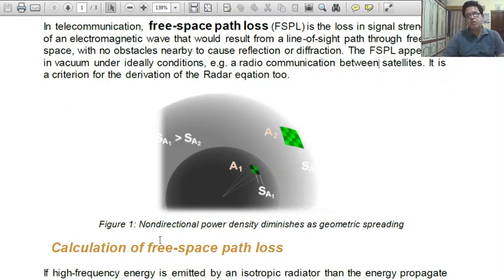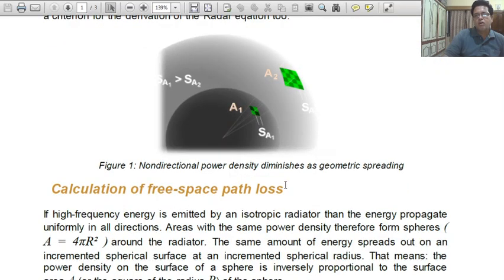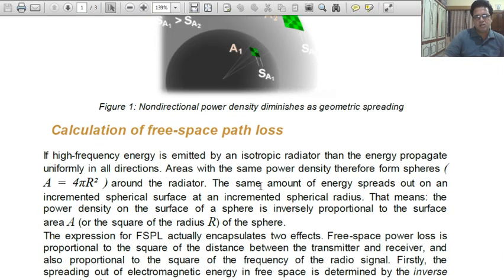This figure shows non-directional power density dimensions as geometry spreading. If geometry spreading, here is an area SA1 and after that area SA1 SA2. So, geometry spreading, then there is power density dimensions.